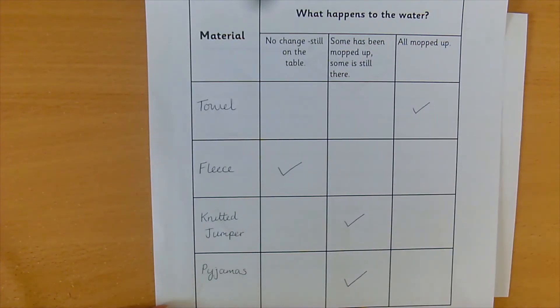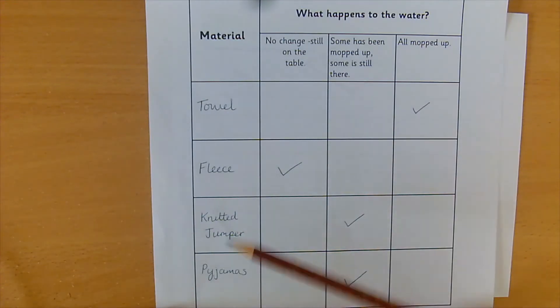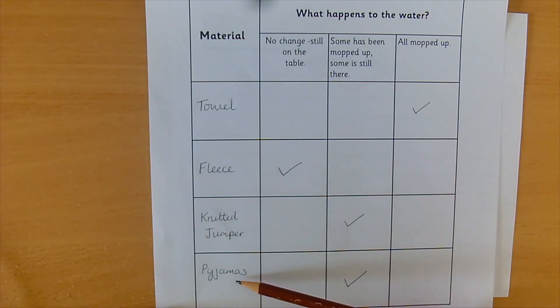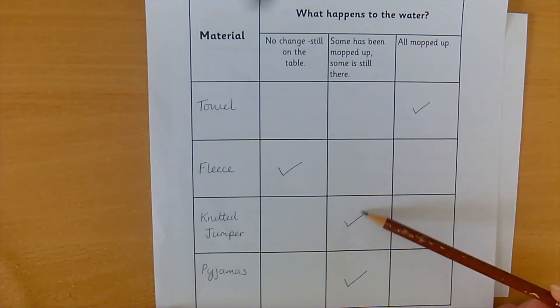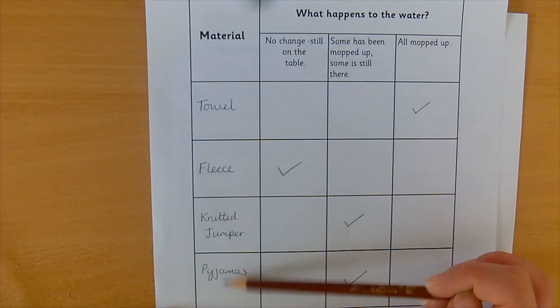So in my investigation I tested a towel, some fleece, sort of a fleecy jumper, a knitted jumper and some pyjamas and the towel mopped up all of the water. The fleece didn't mop any of it up. I was very surprised by that one. The fleece, it sort of started repelling the water. A knitted jumper, soaked up a little bit but not much and the same with the pyjamas. The pyjamas were better than the jumper but the towel was the best overall. So you would have chosen different materials to me. So your conclusion is going to be about your investigation not my investigation.